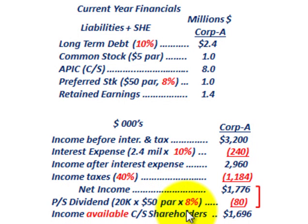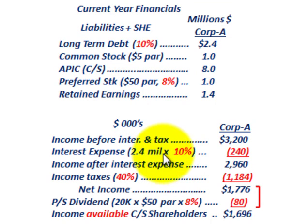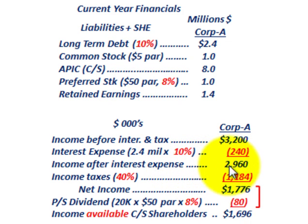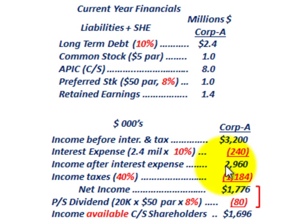We'll start with income before interest and taxes at $3,200,000. Then the interest expense: $2.4 million in long-term debt times 10% gives us $240,000 in interest expense. Subtracting that from income before interest and taxes gives us income after interest expense of $2,960,000. With income taxes at 40%, that's $1,184,000, and subtracting that from income after interest expense gives us net income of $1,776,000.